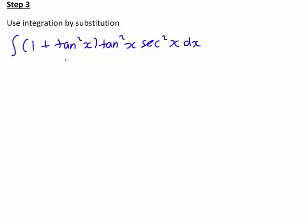What's interesting is that the derivative of tan x is sec squared x. That means we can use integration by substitution here. In fact, that is why we have broken it up in this way, so that we can let u be equal to tan x.